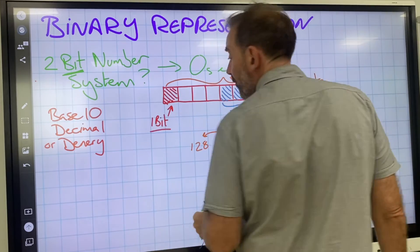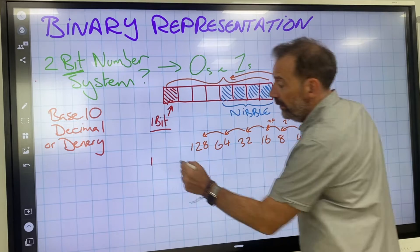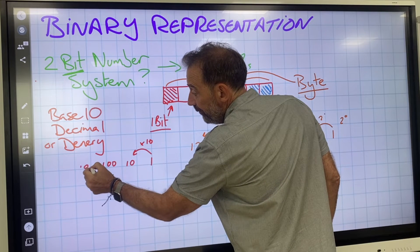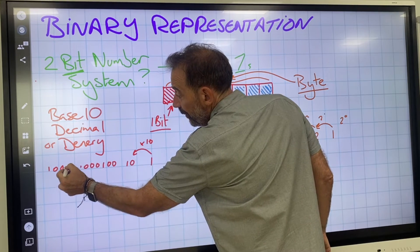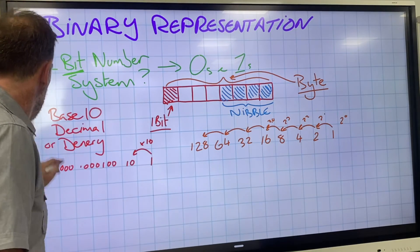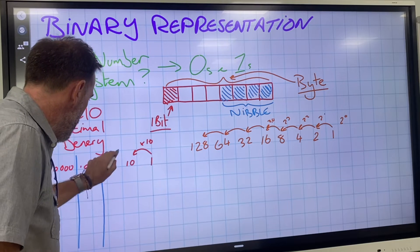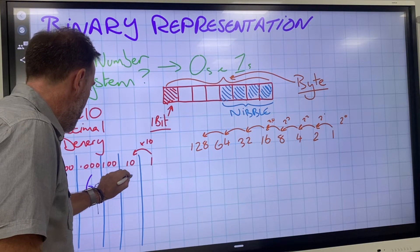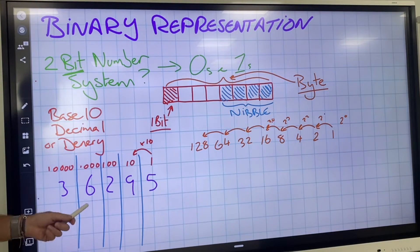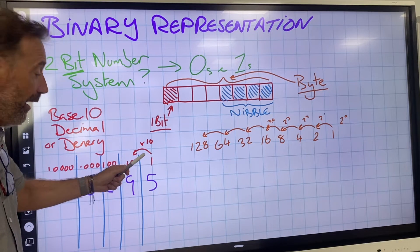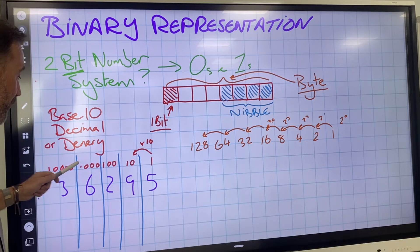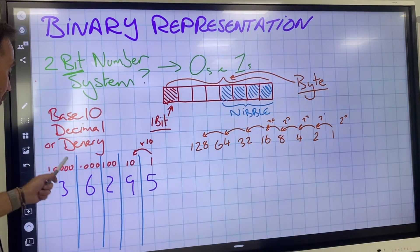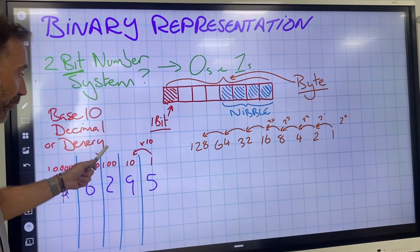The base 10 number system works like this: 10 to the 0 is 1, times by 10, times by 10, times by 10, and so on. For example, if I write 3, 6, 2, 9, 5 — I've got 5 lots of 1s, 9 lots of 10s, 2 lots of 100s, 6 lots of 1,000s, 3 lots of 10,000s. So 36,295 — broken into its component parts — is 3 ten-thousands plus 6 thousands plus 2 hundreds plus 9 tens plus 5 units.